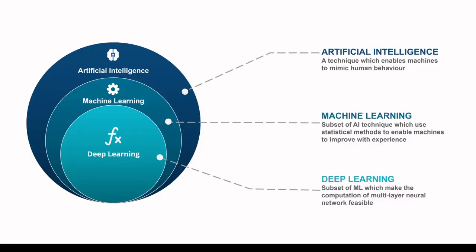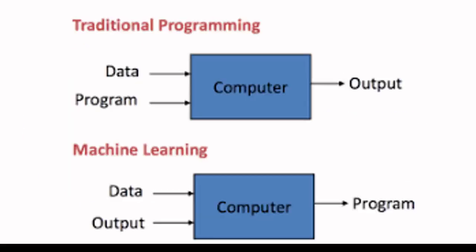Now for a traditional programming example: in traditional programming, you have data and rules, you create a new program, put the computation into the computer, and you get an output. When we talk about machine learning, we use the output and data first, and then the machine learns from that data through training. The computer learns to compute on its own.